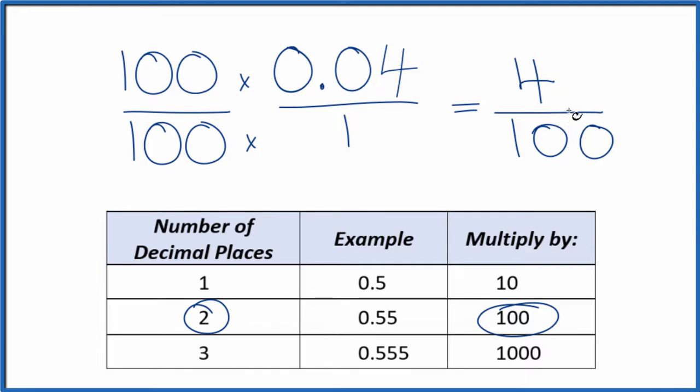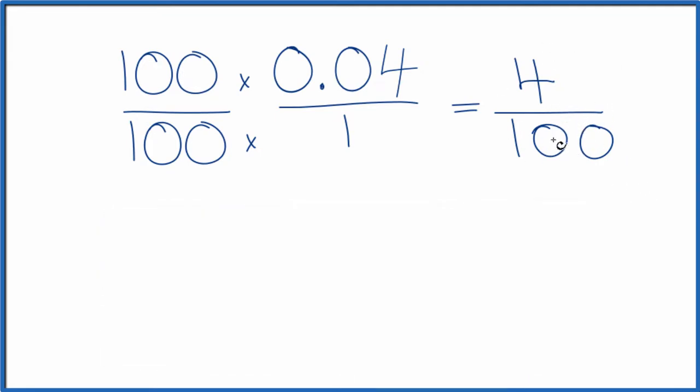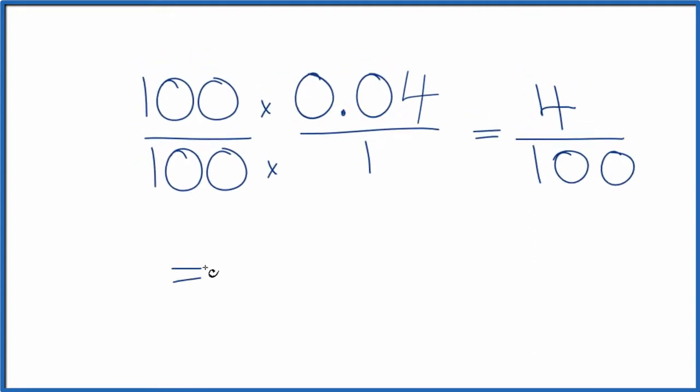We could simplify this further, though. Let's give ourselves some room. So for 4 over 100, we could just divide 4 by 2 and 100 by 2, and that would give us 2 over 50.